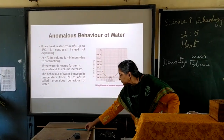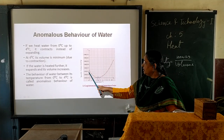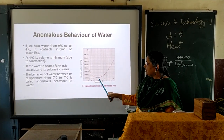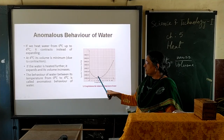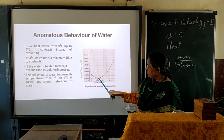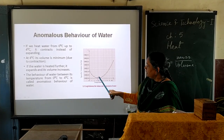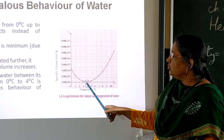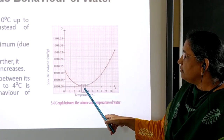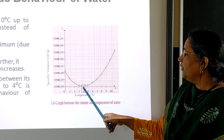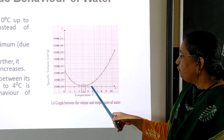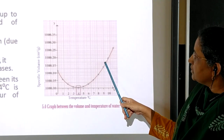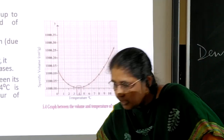If you observe this in the graph: from zero to four degrees Celsius, as the temperature increases, water instead of expanding, contracts — its volume goes on decreasing. The volume becomes minimum at four degrees Celsius. After four degrees Celsius, as the temperature increases, the volume also goes on increasing.